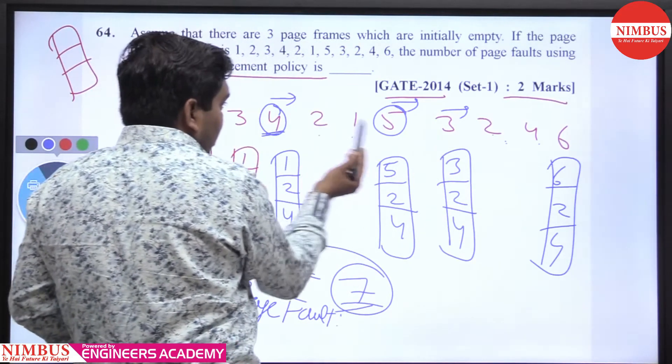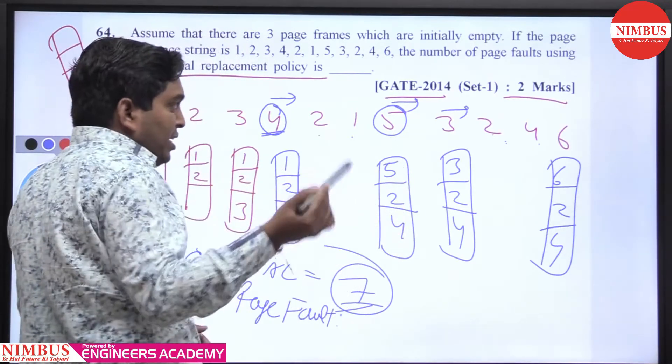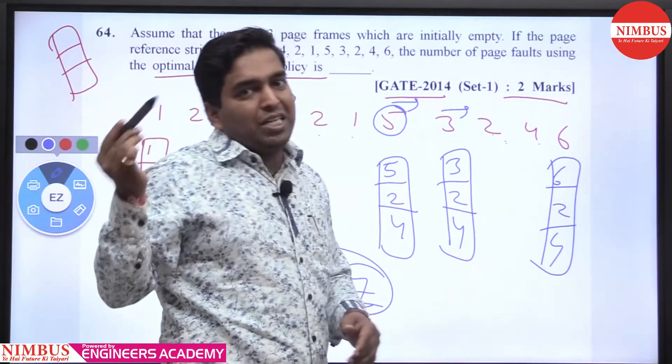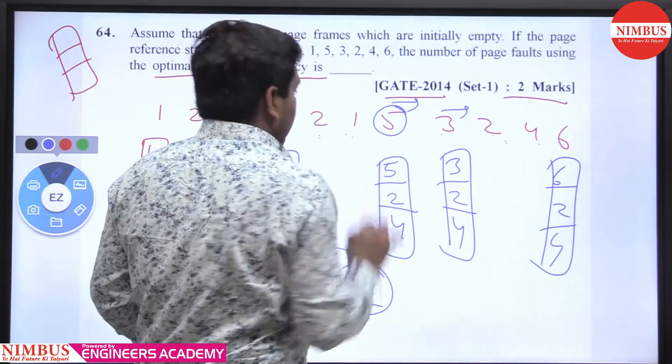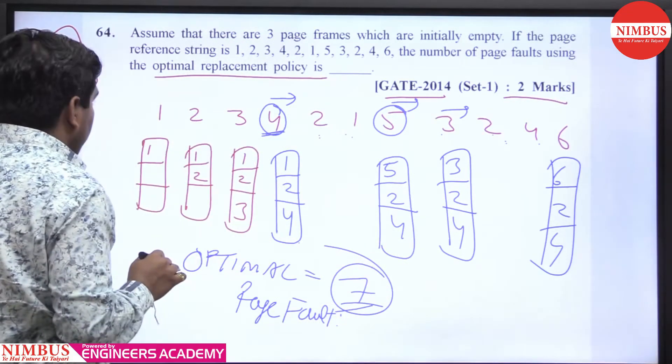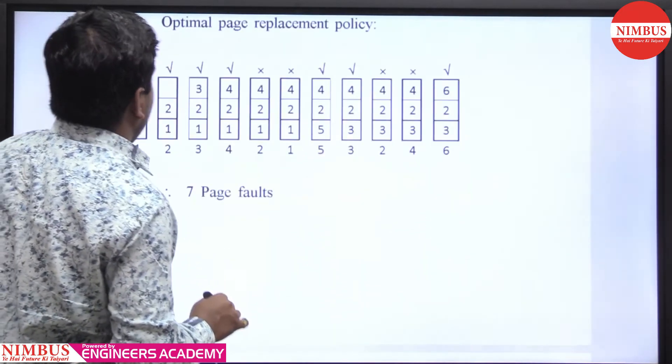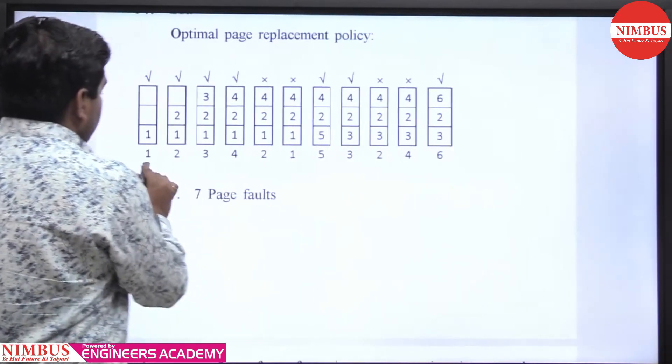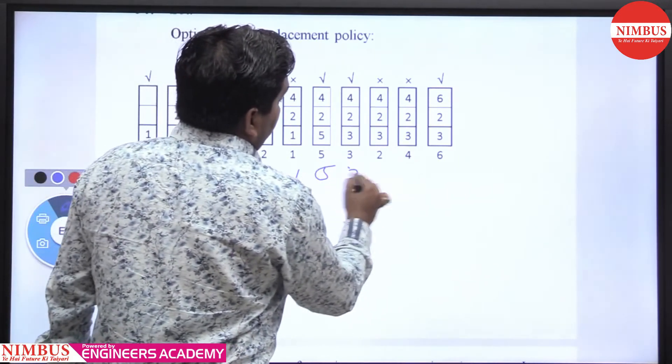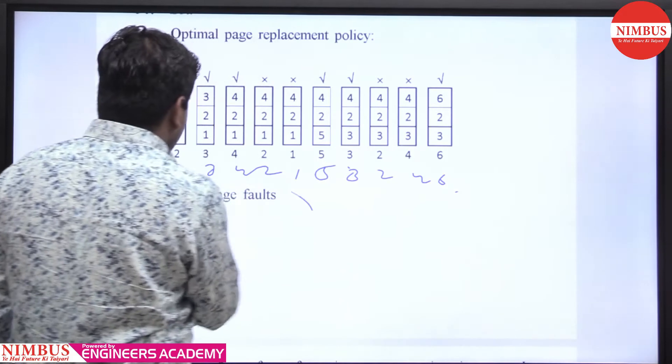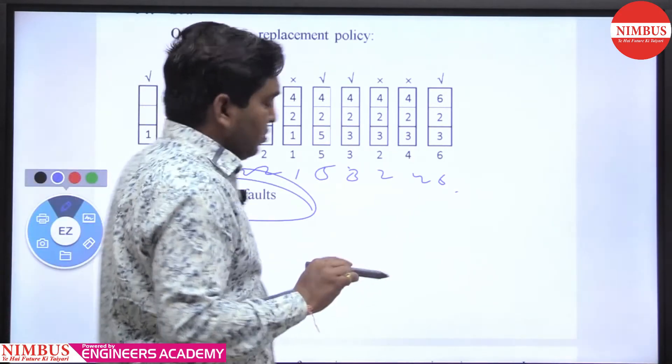Again, the answer is 7 page faults. To summarize: the reference string is 1, 2, 3, 4, 2, 1, 5, 3, 2, 4, 6, and using the optimal page replacement policy, the number of page faults is 7.